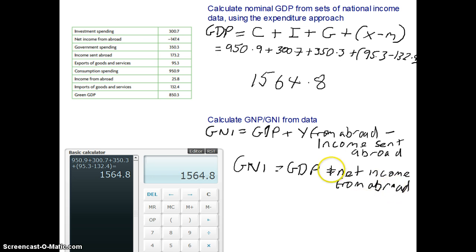So I'm still getting used to this pen, but hopefully I'll get there. Anyway, we've already got net income from abroad, so we can simply find out our GDP. So 1564.8, okay so minus 147.4. So let's work that out on the calculator.